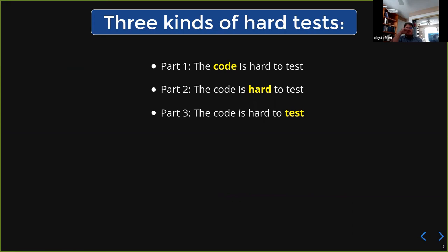Roughly speaking, either the code is hard to test, the code is hard to test, or the code is hard to test. It's either that the code in and of itself makes testing difficult, or what the code does is fundamentally hard to test, or something about the test you have to do for it is difficult.